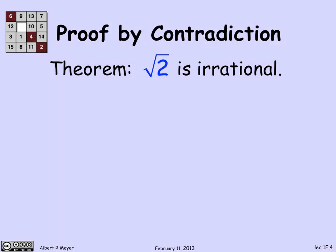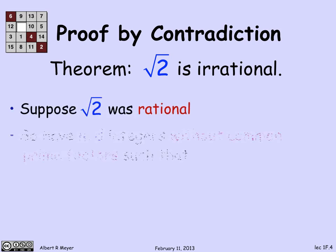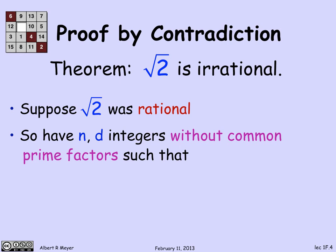So let's look at a real example of this — an amazing fact known thousands of years ago to the ancient Greeks, which is that the square root of 2 is irrational. A rational number is a fraction, a quotient of integers. The way we're going to prove that the square root of 2 is not a quotient of integers is by assuming that it was. So let's assume the square root of 2 is a rational number, which means we've got integers n and d without common prime factors such that the square root of 2 equals n over d.